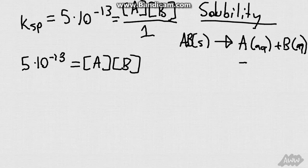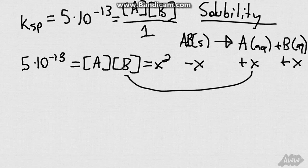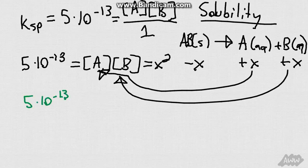Which, if we do an ice table, we get plus X and plus X and minus X, because we started with only AB as a solid, so what will we be left with is essentially X squared. So we take these X's and replace them into their respective ions and concentrations. So, this essentially becomes our equation, 5 times 10 to the negative 13th is equal to X squared, so therefore, X is essentially the square root of 5 times 10 to the negative 13th, and that is your solubility problem.